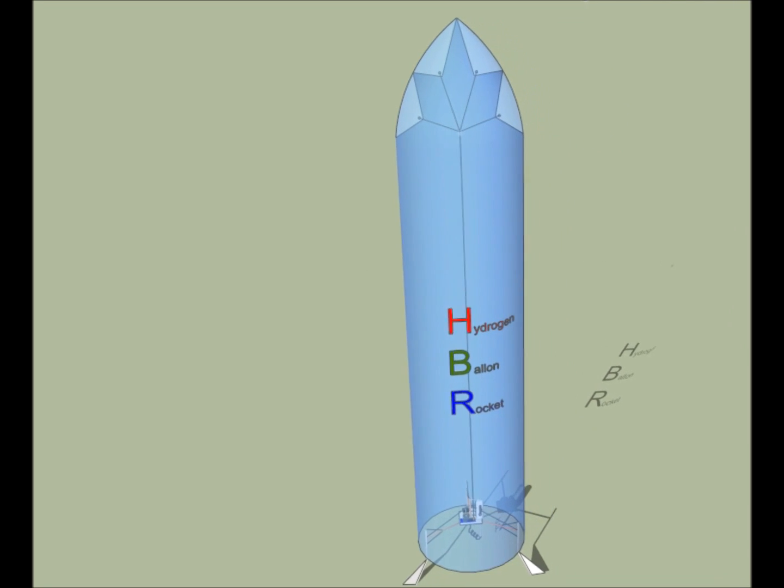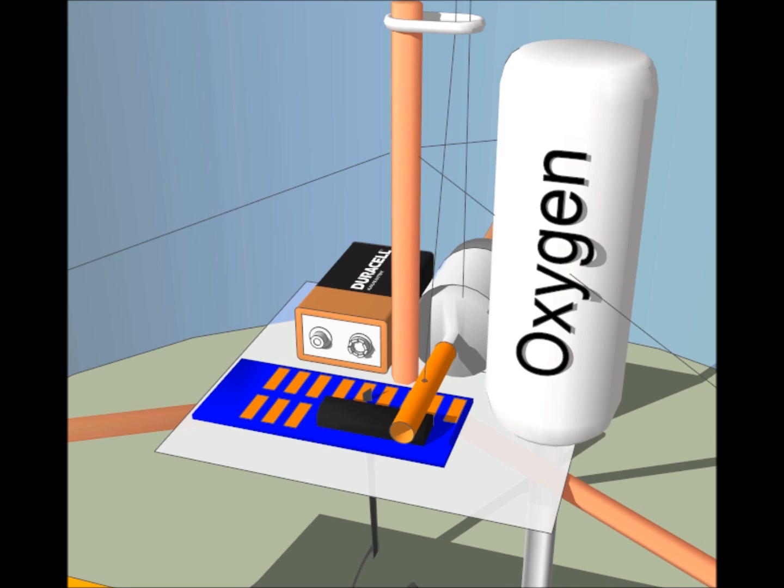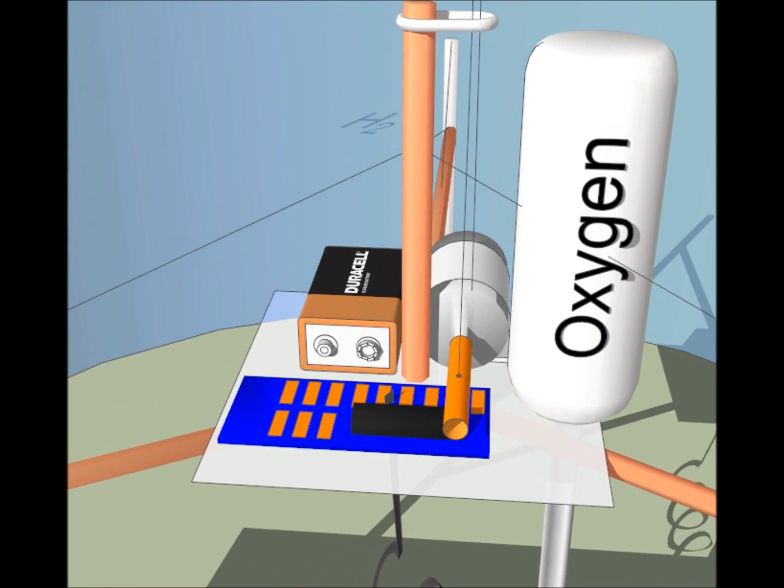The rocket is filled only half with hydrogen. At 40 kilometers height, the hydrogen has expanded and fills the entire balloon.